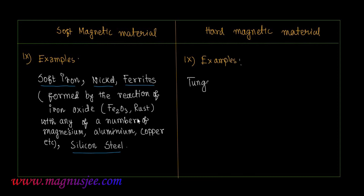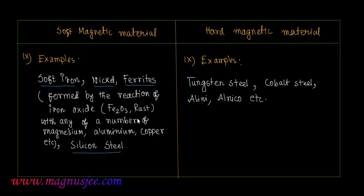Examples of hard magnetic materials are tungsten steel, cobalt steel, and alnico, etc.